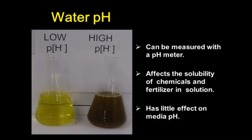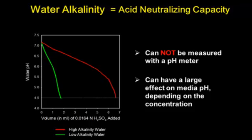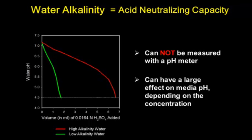pH also has an effect on media pH. Water alkalinity, on the other hand, is different. Water alkalinity, or acid neutralizing capacity, is the total amount of bases contained in the water. It cannot be measured with the pH meter, but it has a very large effect on media pH.